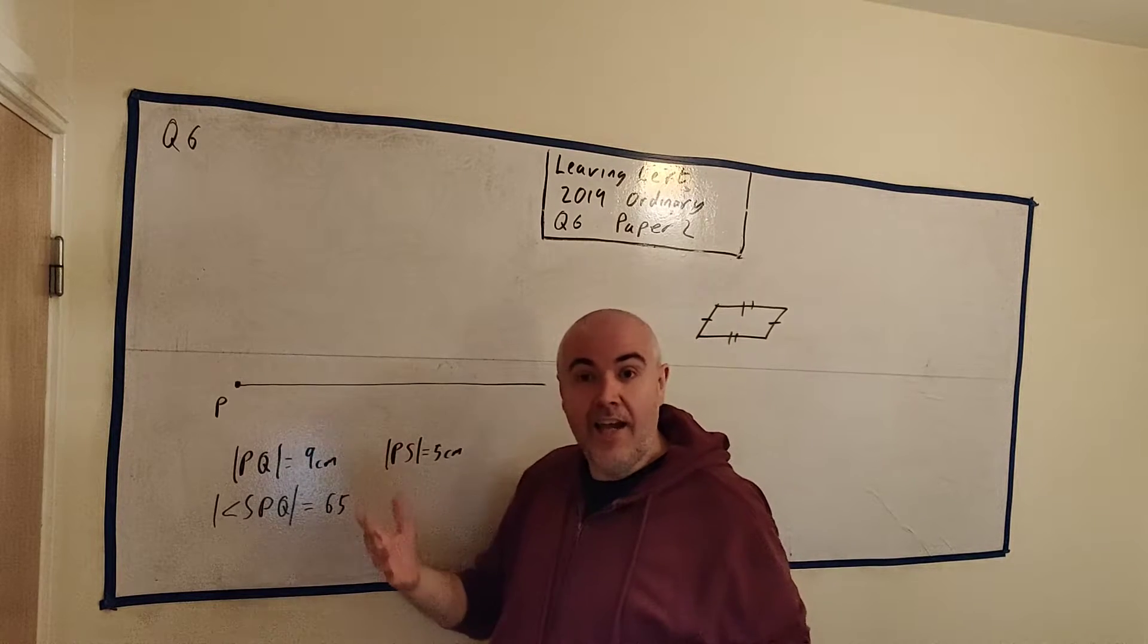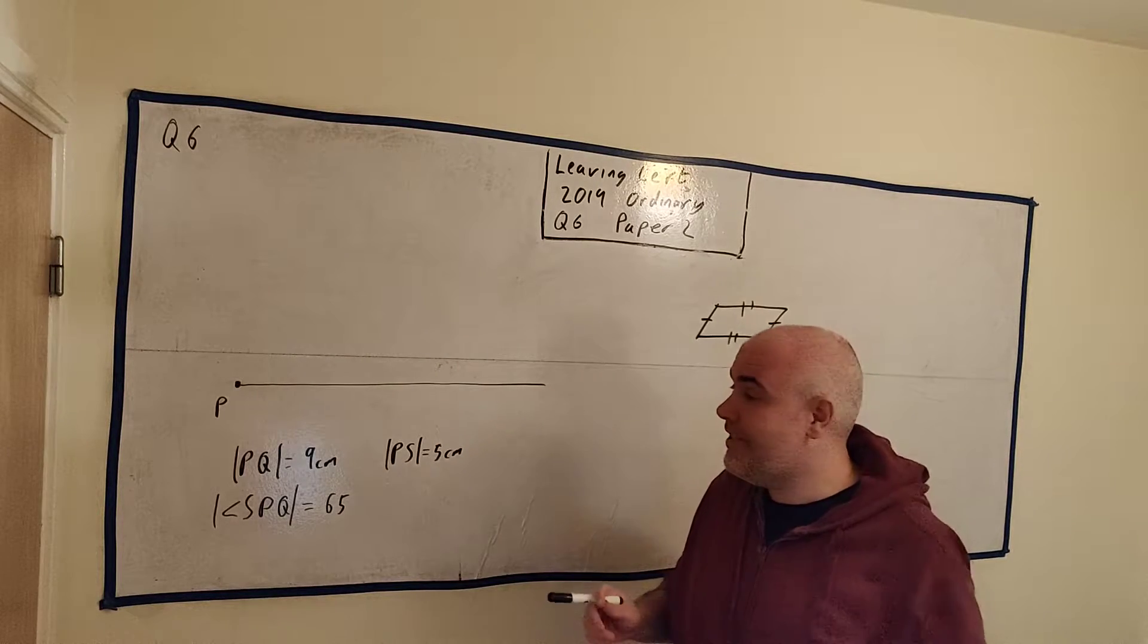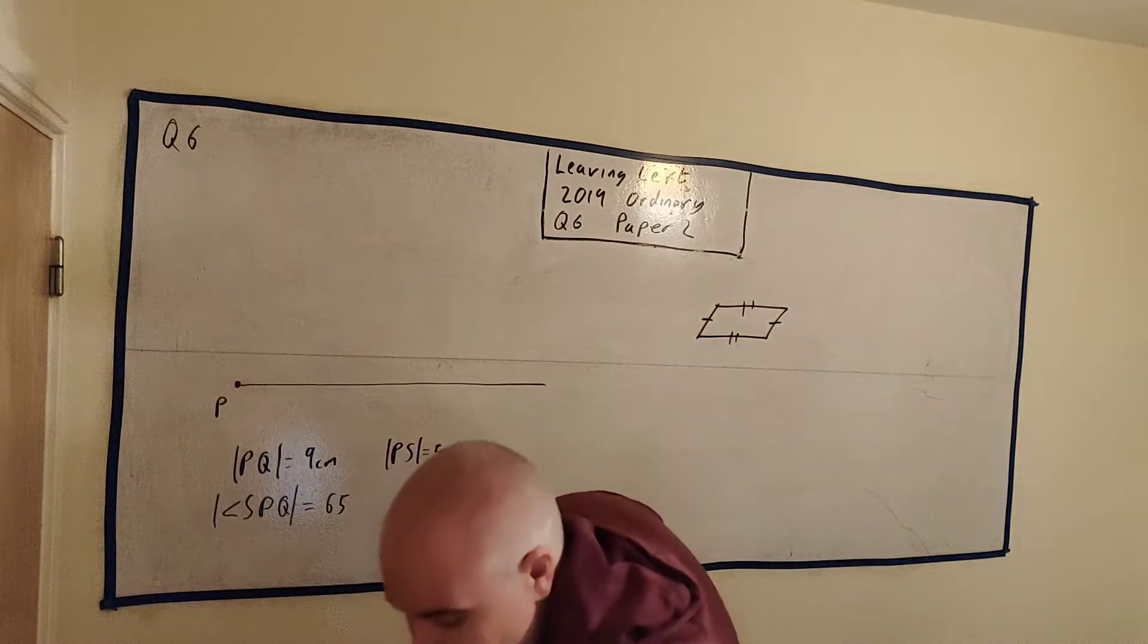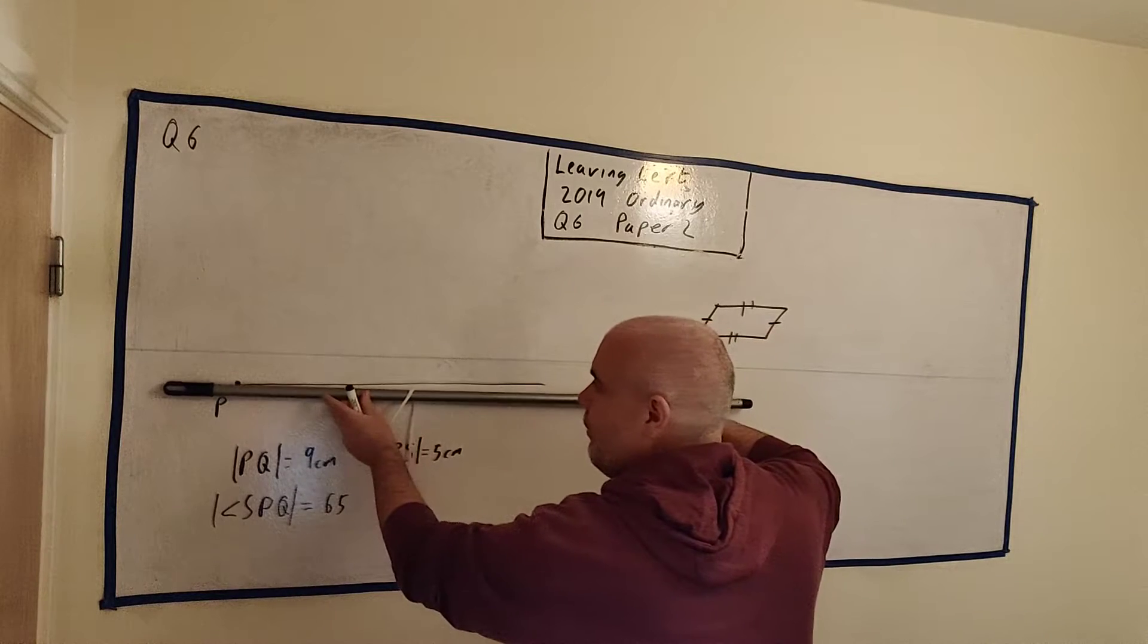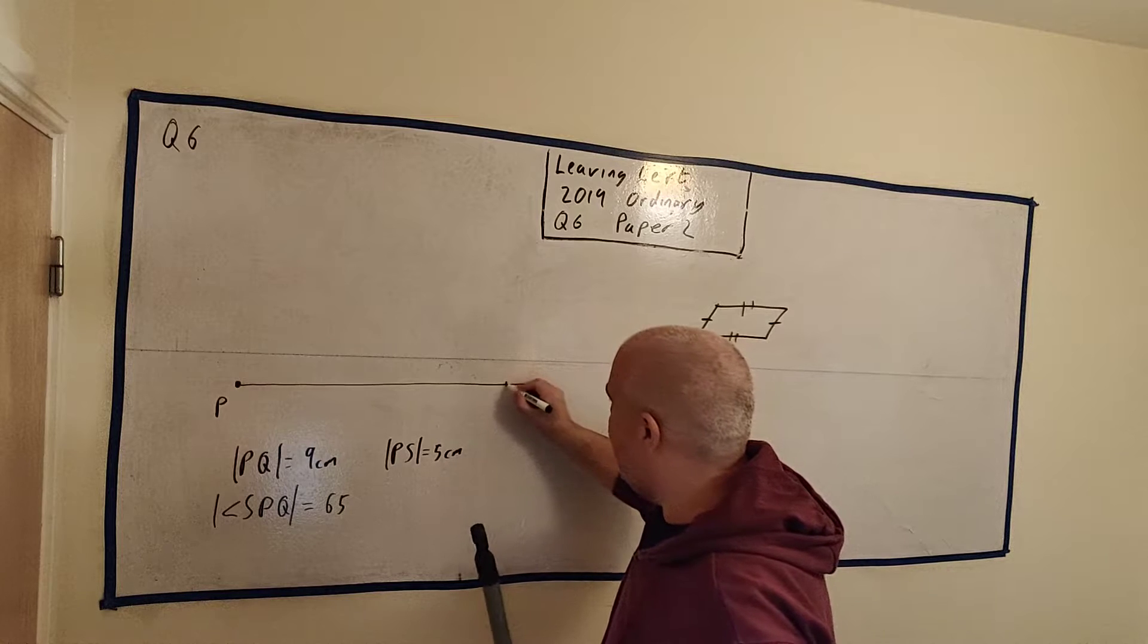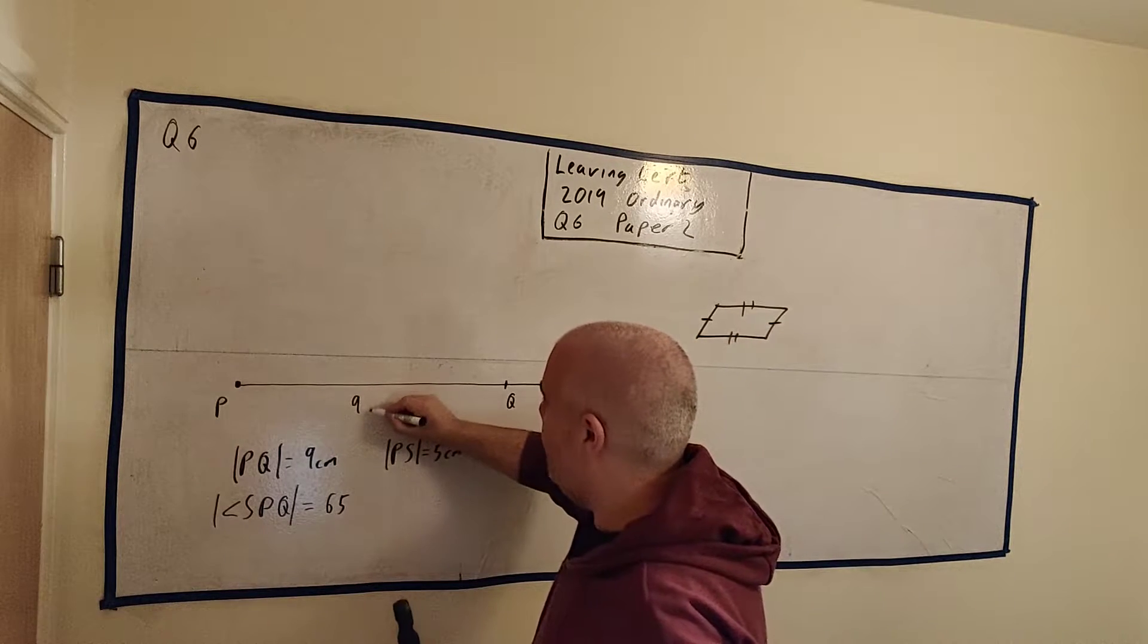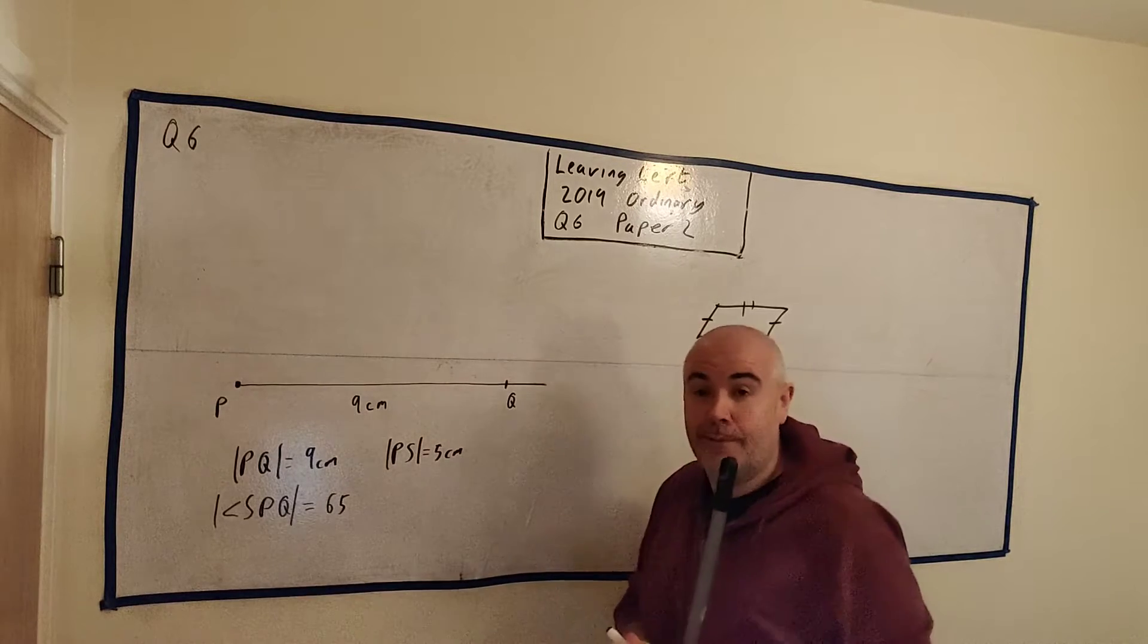PQ, we just need a line that's 9 centimeters long. They gave us a line to start with, so I'd simply get my ruler. I don't have an actual one with measurements on it, but I'd get a ruler, measure out 9 centimeters, and we simply put a mark there. That becomes Q. That's 9 centimeters long.